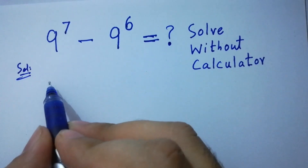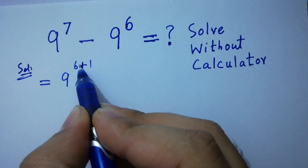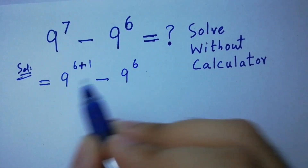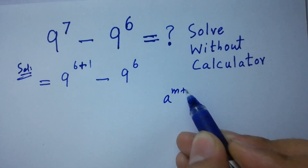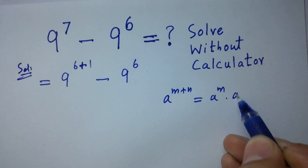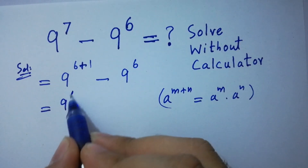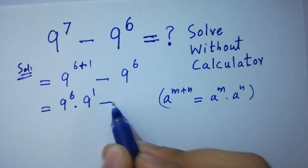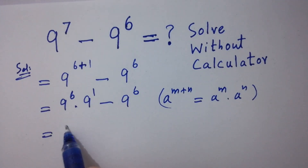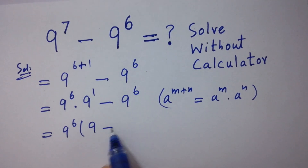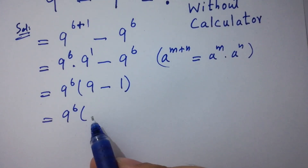Here, it can be written as 9 to the power 6 plus 1 minus 9 to the power 6, since 6 plus 1 is 7. As we know, a to the power m plus n equals a to the power m times a to the power n. Then it will be 9 to the power 6 times 9 to the power 1 minus 9 to the power 6. Here, 9 to the power 6 can be common, giving us 9 to the power 6 times (9 minus 1), and 9 minus 1 gives us 8.